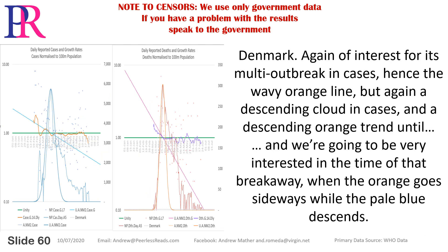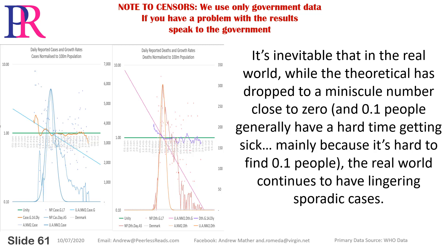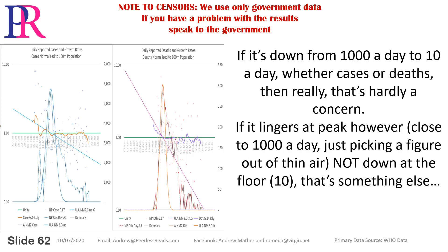Denmark — again of interest for its multi-outbreaking cases, hence the wavy orange line. But again, a descending cloud in cases and a descending orange trend until — and we're going to be very interested in the time of that breakaway — when the orange goes sideways while the pale blue descends. It's inevitable that in the real world, while the theoretical has dropped to a minuscule number close to zero, the real world continues to have lingering sporadic cases. If it's down from 1,000 a day to 10 a day, whether cases or deaths, then really that's hardly a concern. If it lingers at peak, however, close to 1,000 a day, that's something else.